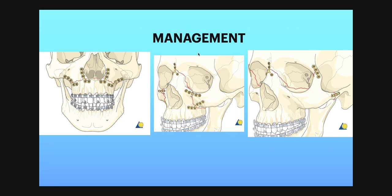Management of LeFort fracture through mini plates involves plating at the buttress region. For LeFort 1 (low maxillary or hanging maxilla fracture), two plates are placed at the buttress region. For LeFort 2, three plates are placed: one at the nasofrontal suture, one at the intraorbital rim, and one at the zygomaticomaxillary buttress. For LeFort 3 fracture, three plates are placed: one at the nasofrontal suture, one at the FZ suture, and one at the zygomatic arch.